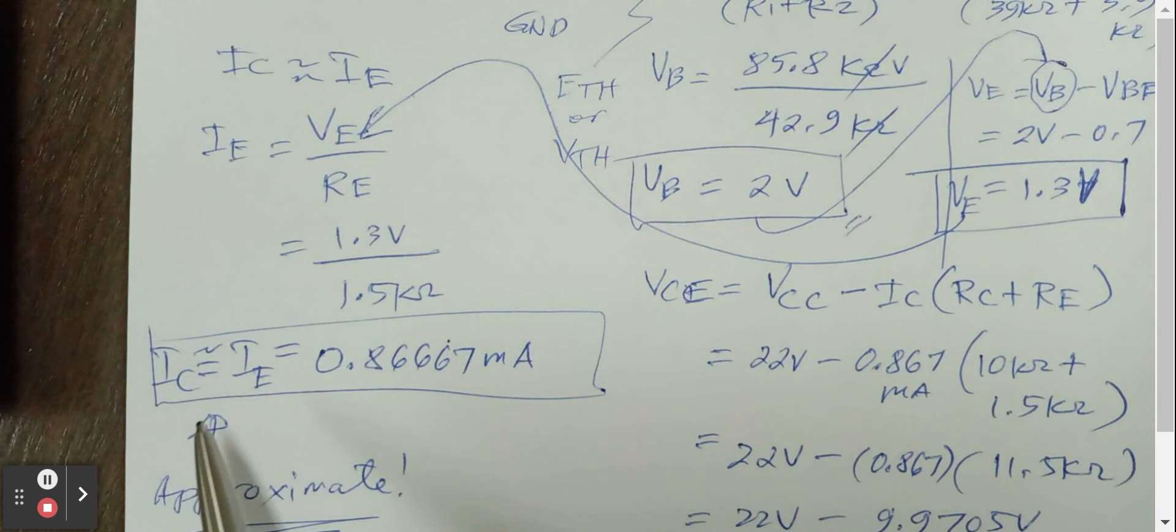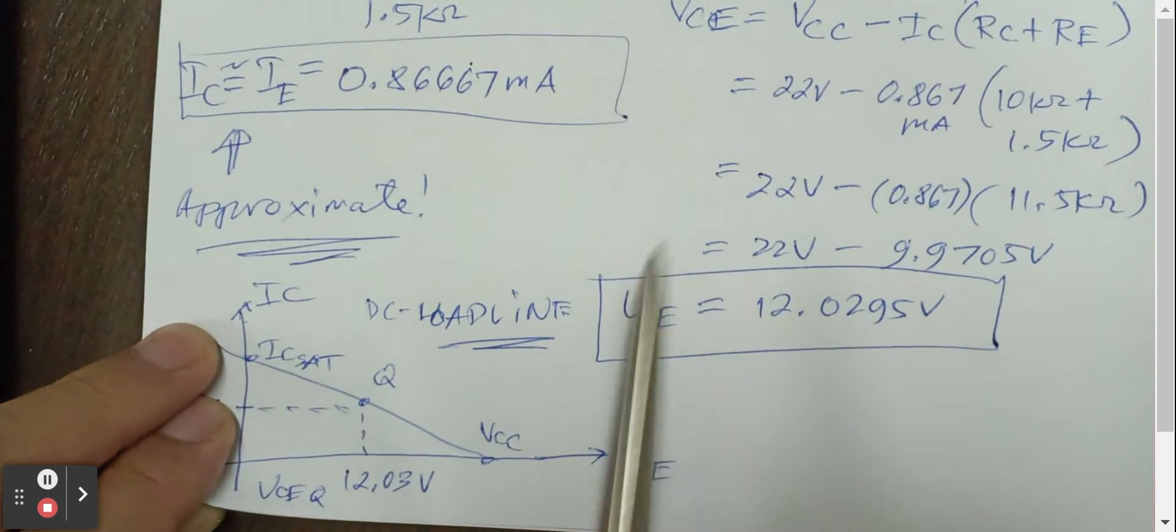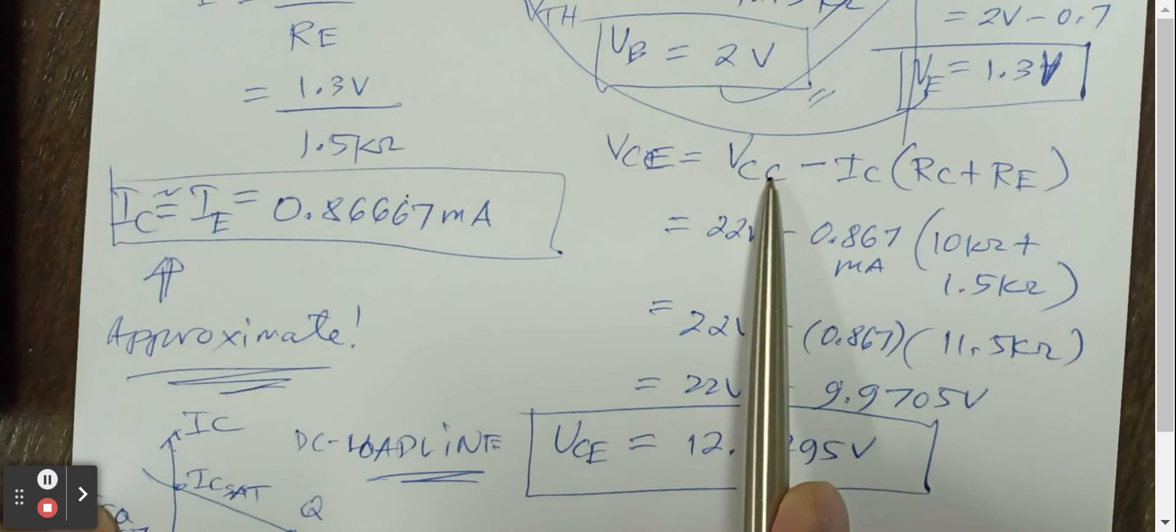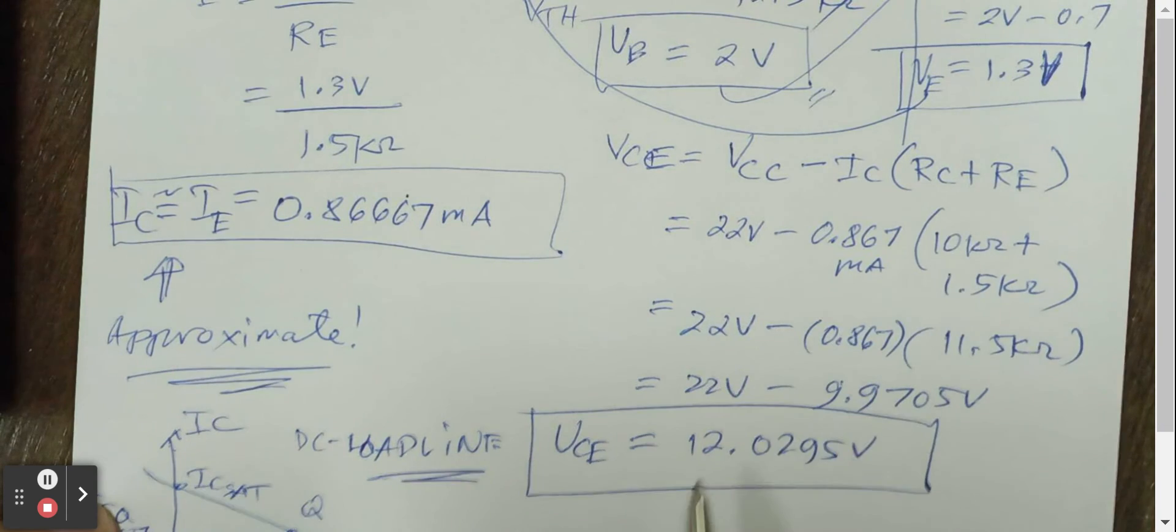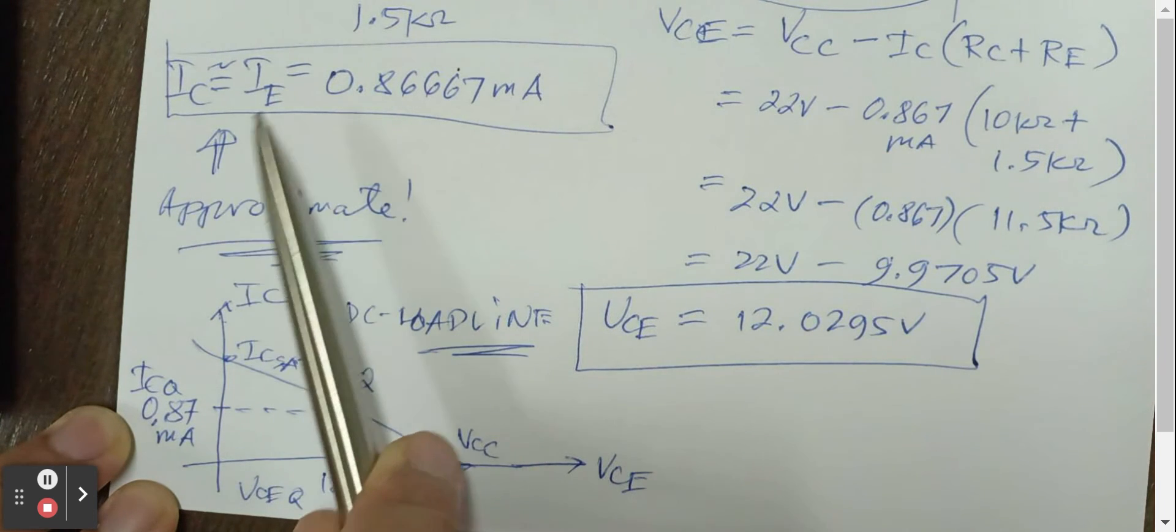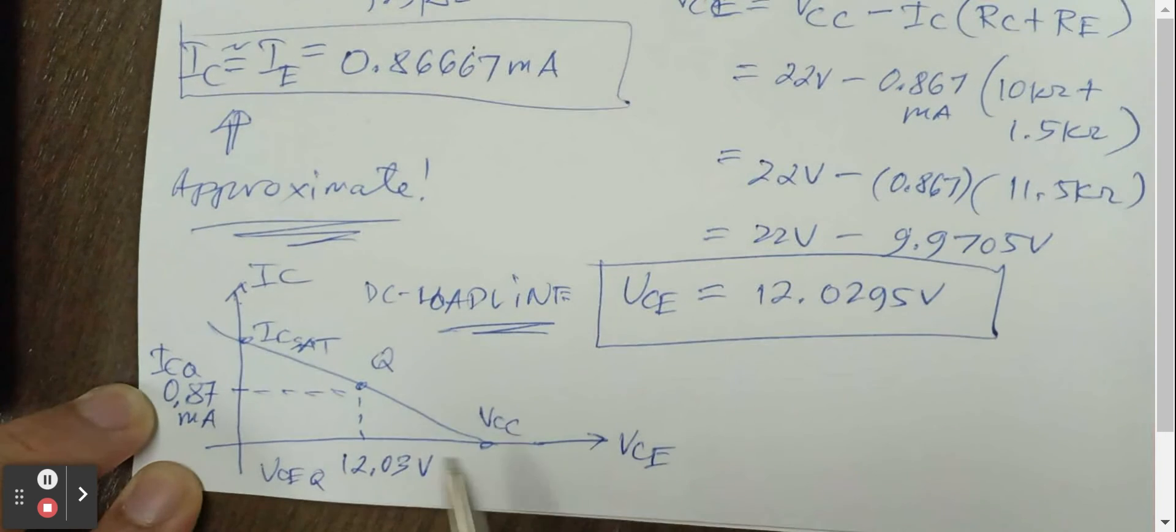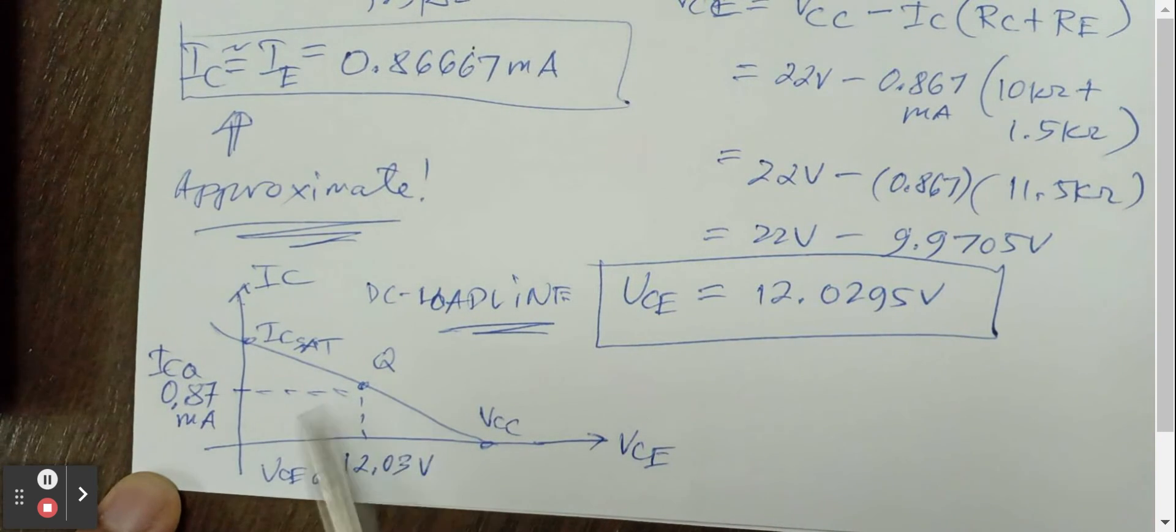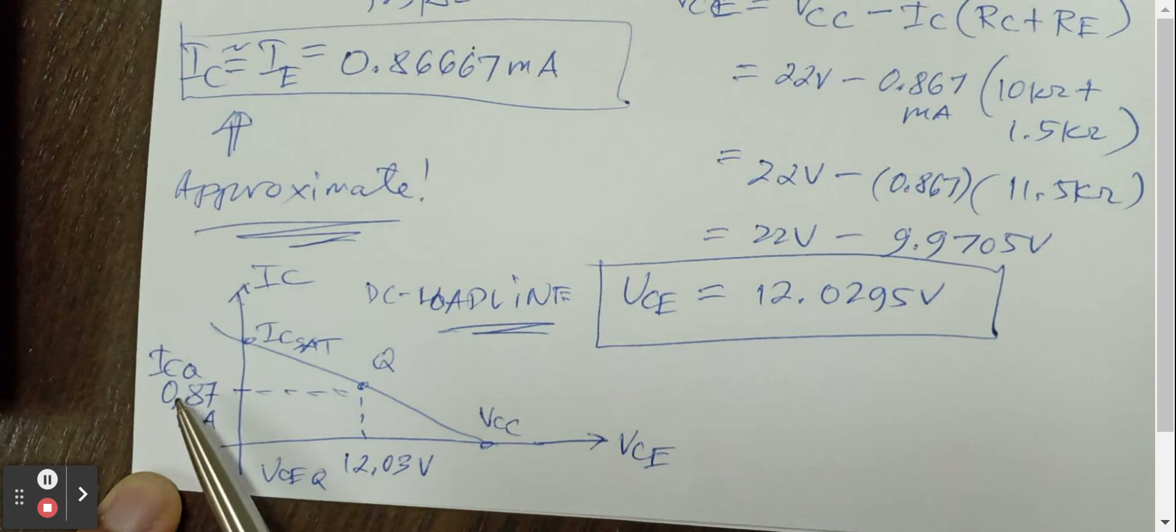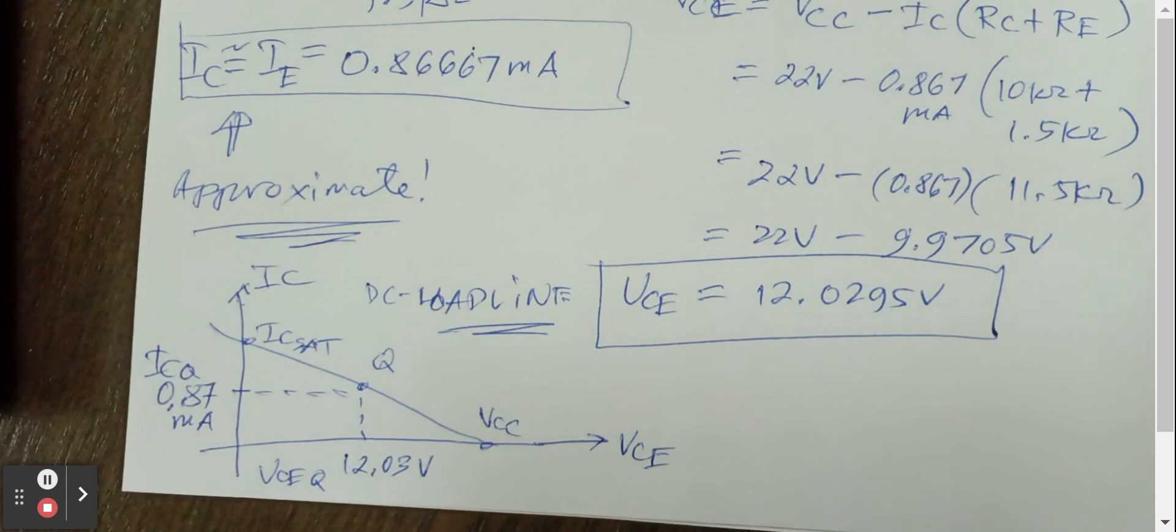In the previous examples, we have Ic equal to beta Ib. But here, we make it equal to Ie, which is also the Ic. And then, we go ahead with the Vce using this formula, Vcc minus Ic times Rc plus Re. And we got 12.0295. So this will be our Icq, which is approximately equal to Ie and the Vceq. And this is our DC load line. And our Q point is on the Icq 0.87 milliampere and on the Vceq of 12.03 volts.